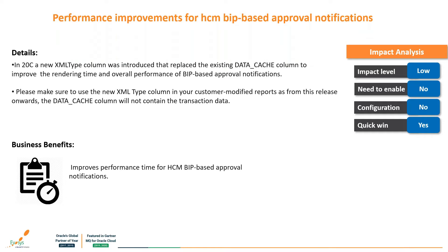There are also performance improvements in HCM BIP page notifications. A new XML type column was introduced in the previous release 20C, and from this release the data cache column has become obsolete - only the new XML type column will be utilized. This improves performance time for HCM BIP approval notifications and gives us seamless approval flows. We are expecting further improvements in future releases.